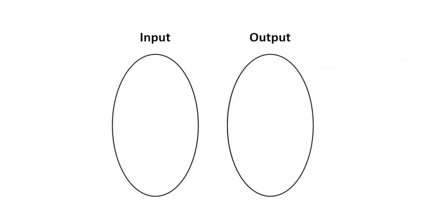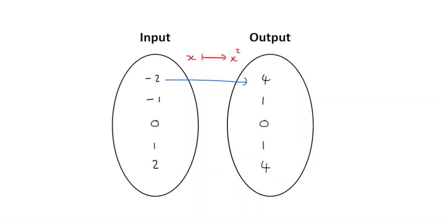Let's look at the next example. Let's say we've got the rule that x is mapped onto x squared. Again, let's have input values negative 2, negative 1, 0, 1, and 2. Negative 2 will be mapped onto 4, negative 1 is mapped onto 1, 0 to 0, 1 is mapped onto 1, and 2 is mapped onto 4, because minus 2 squared is 4, minus 1 squared is 1, and so on.